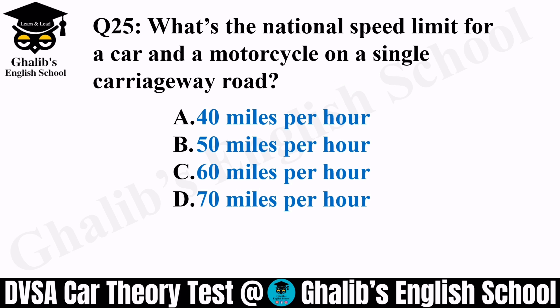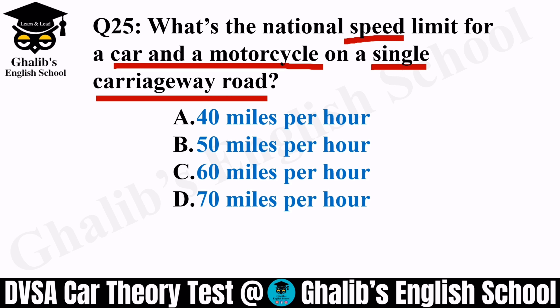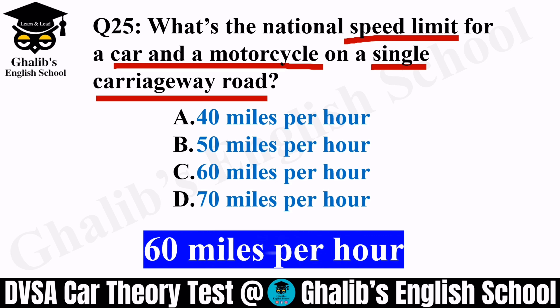Question 25. What is the national speed limit for a car and motorcycle on a single carriageway road? Speed limit is very important — you need to follow it, and as soon as the road type changes, the speed limit changes too. Options: 40, 50, 60, or 70 mph. On a single carriageway, the limit is 60 mph.